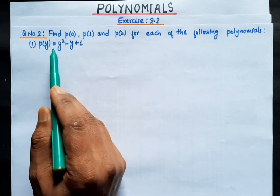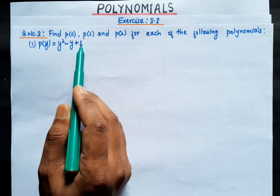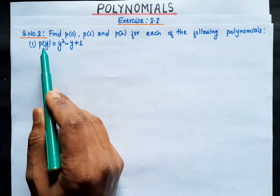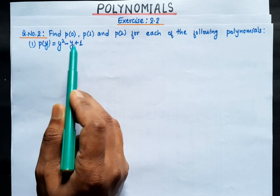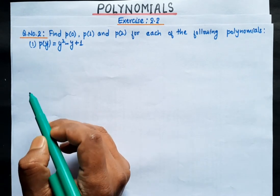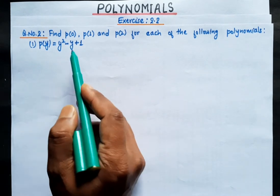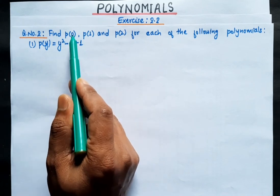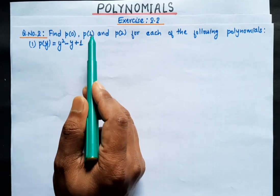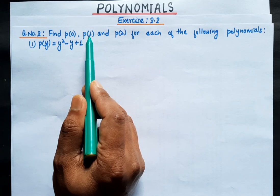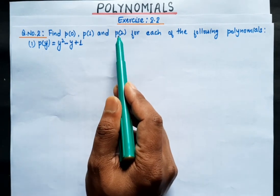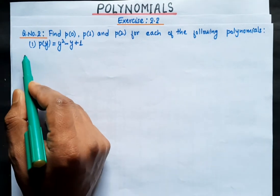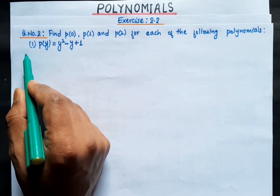Question number one: our polynomial is p(y) = y² - y + 1. This polynomial is in terms of y, so our variable is y. P0 means in place of the variable we put 0; P1 means we put 1; and P2 means we put 2.